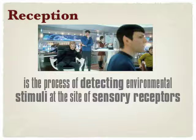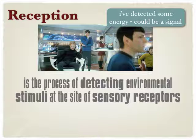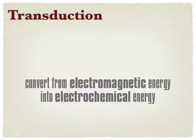The photoreceptor receives the electromagnetic energy and detects it, but the rest of our whole body system is based on electrochemical information systems — like neurotransmitters and neural impulses passing from neuron to neuron eventually to the brain. So we need to then go to the next process, which is transduction, where they convert electromagnetic energy into electrochemical energy.